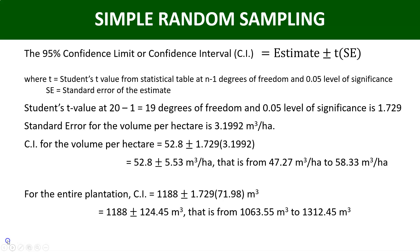For the entire plantation, the confidence interval is: 1,188 ± 1.729 × 71.98 = 1,188 ± 124.45 cubic meters. Expanding that range gives a lower limit of 1,063.55 cubic meters to an upper limit of 1,312.45 cubic meters. That is the final answer to the question.